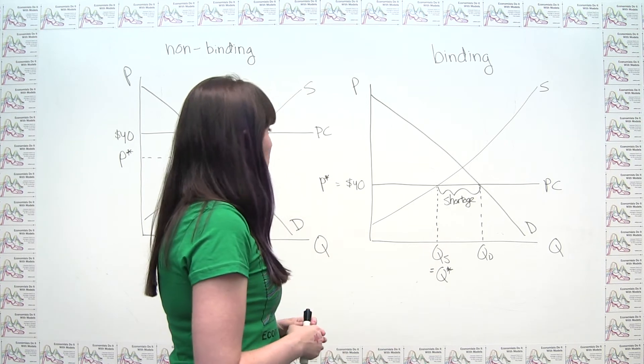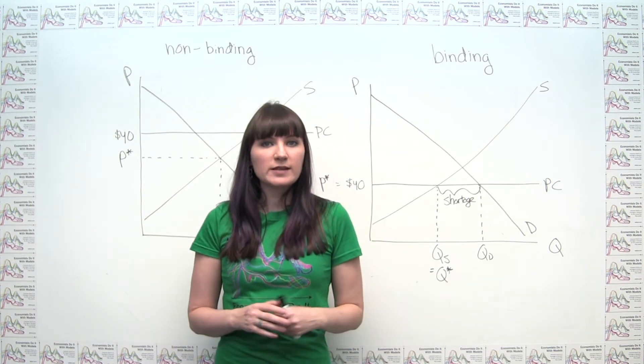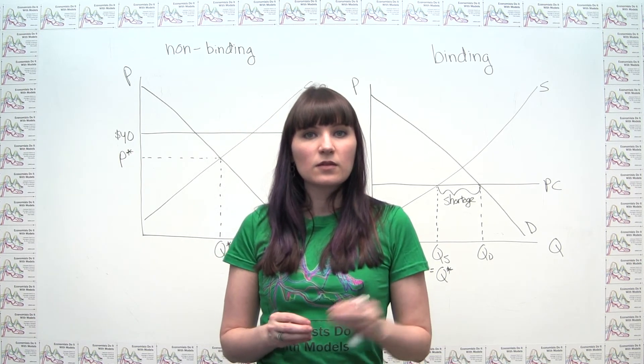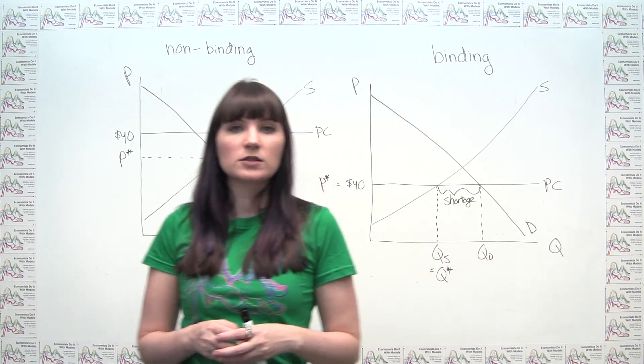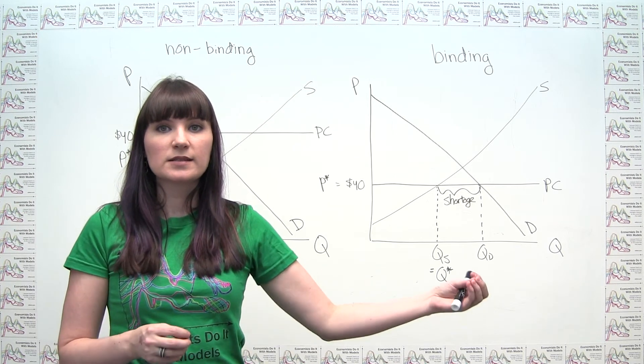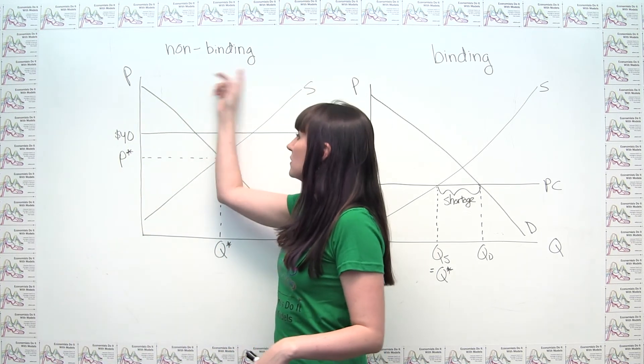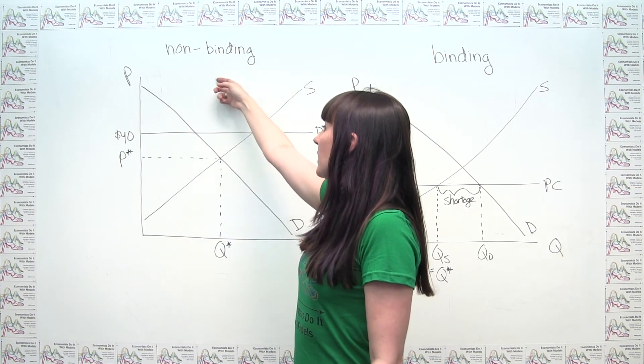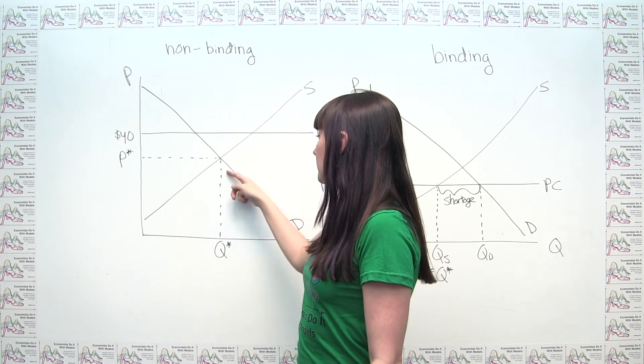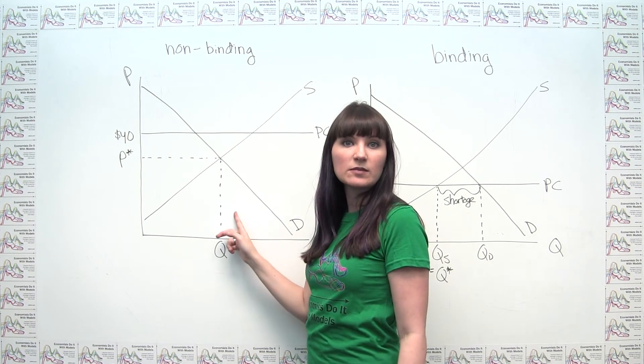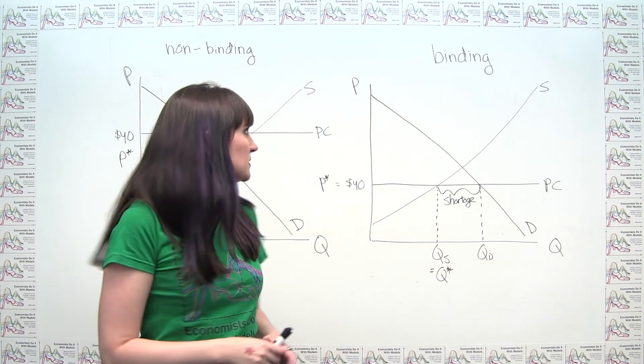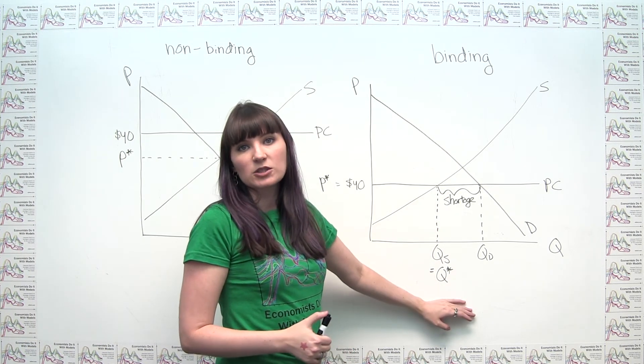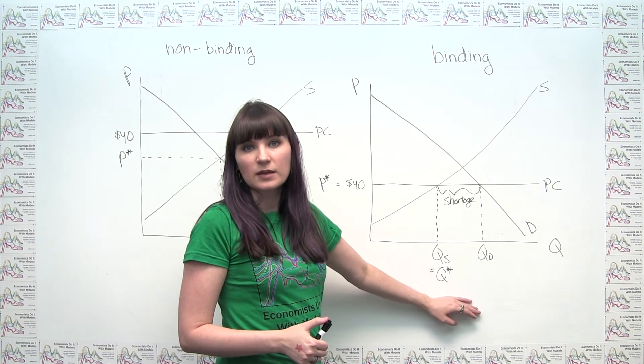So in response to the specific question, when we put a price ceiling in place, whether or not the number of tickets available is going to decrease or stay the same depends on whether or not the price ceiling is binding. So if the price ceiling is not binding, the number of tickets that people can consume is going to be the same as it was before. But if a price ceiling is binding, the number of tickets consumed is actually going to be less than it was before.